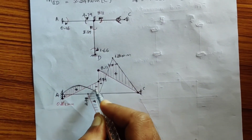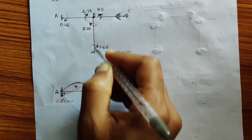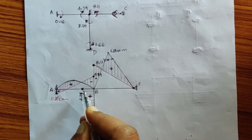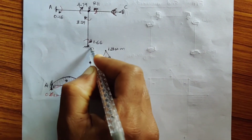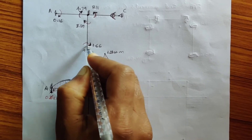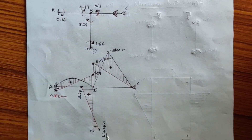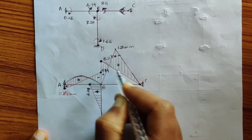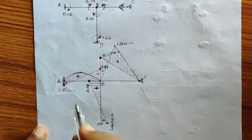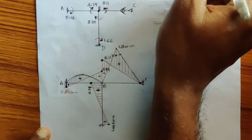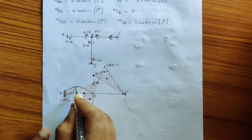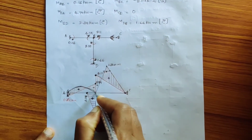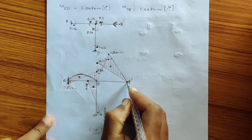For the BD span element, since we already have a negative moment, we mark the ordinate. The arrow mark at B is towards the left-hand side of element BD, so the ordinate is marked to the left. At D, the 1.66 kN·m arrow mark is towards the right-hand side of BD, so the ordinate is marked to the right. Then join these two points. We have now joined support moments: 0.16 to 4.79, 8.11 to 0, and 3.29 to 1.66. Next, mark the free bending moment values: 2.25 kN·m as a parabolic shape over span AB for the UDL, and 12 kN·m as a triangular shape over span BC for the 10 kN concentrated load.